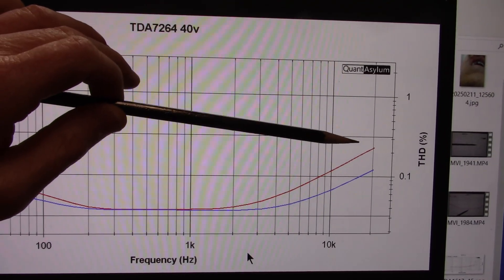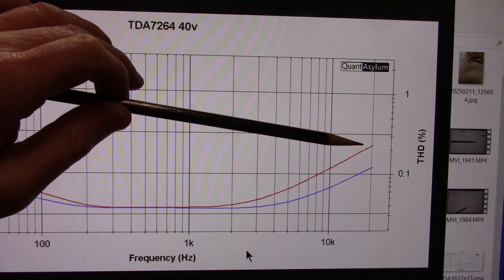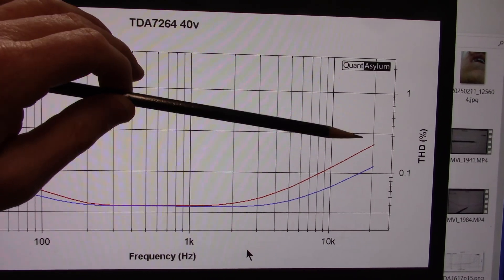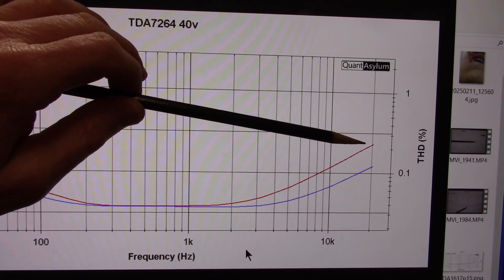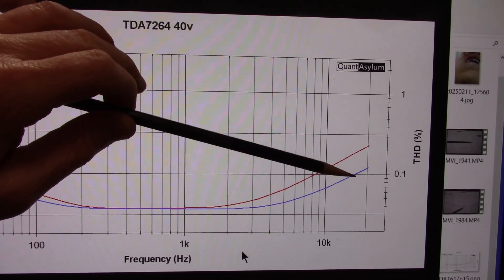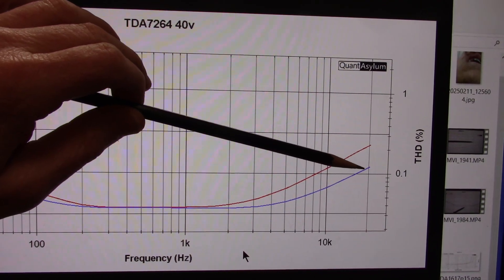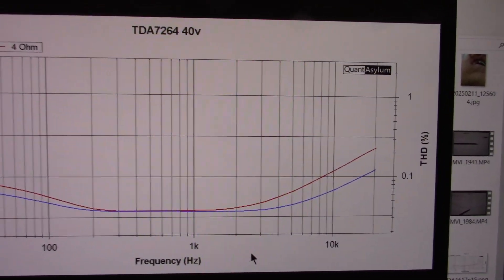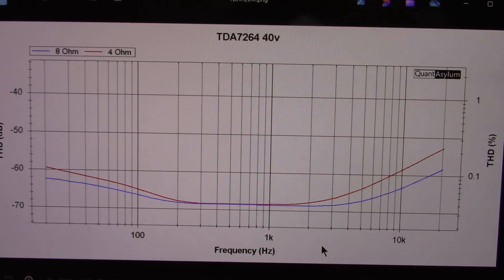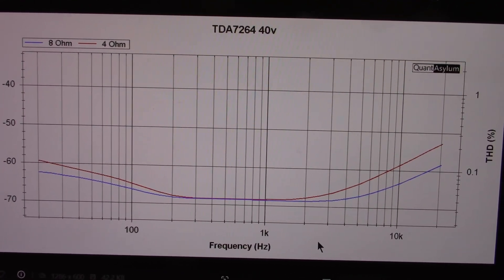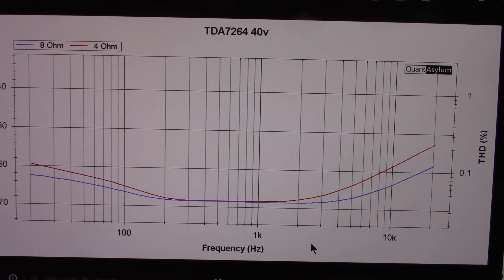We end up at 20 kilohertz at 4 ohms around a little over 0.2 percent, which is still pretty darn good, and 8 ohms slightly over the 0.1 line. So I'd say this amplifier is performing pretty darn well. It's not in the league of the TDA 2050, but it's doing pretty good.